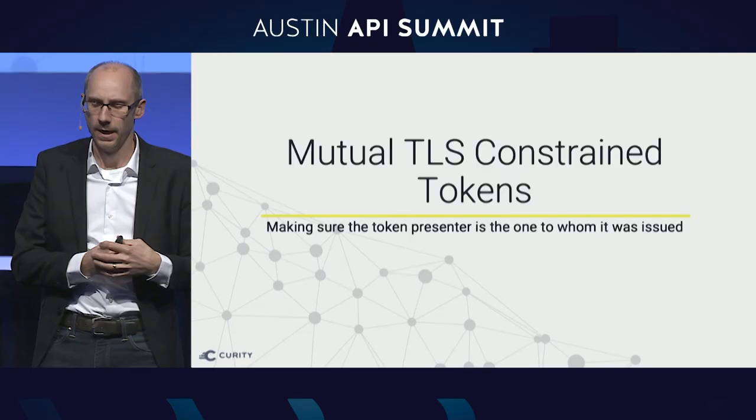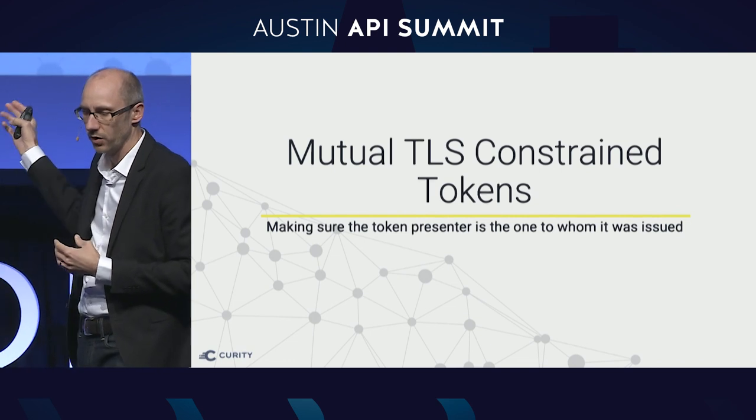If you have a bearer bond and you steal it, you have it. So a bearer access token means if you have the token, you're that user. That's the Achilles heel — if I can snatch someone else's token, I can become them. What we want is a token tied to the entity to whom it was issued. The opposite of a bearer token is called a holder-of-key token or proof-of-possession token, and that's what mutual TLS constrained tokens are.